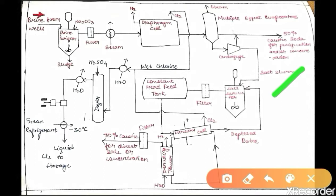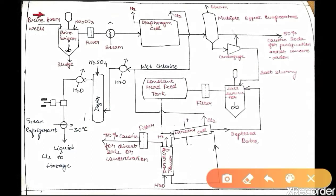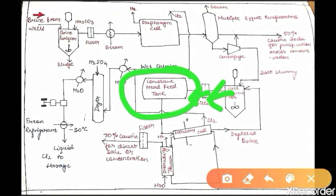The sludge or slurry from the multi-effect evaporators is sent through a centrifuge where washing and separation occur. The NaOH is recovered and sent to a storage vessel. Any NaCl (brine) present is sent to a salt saturator to be recycled and reused. From the salt saturator the brine passes through a filter to remove impurities, then is stored in a constant-head feed tank (reservoir) before being sent to the mercury cell.